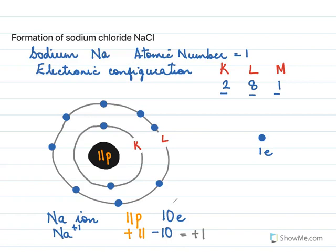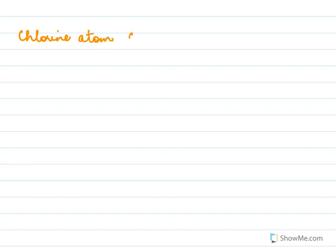To repeat: sodium always tends to lose one electron. Now when it comes to the chlorine atom, it is represented as Cl and the atomic number of chlorine is 17.